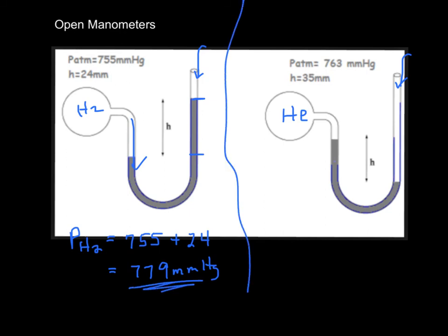Now this one over here, we can see that the helium is losing. It's losing by this height right here. So in this case, the pressure of the helium is the 763 that they gave us here, minus the 35. So that's going to be 728 millimeters of mercury.